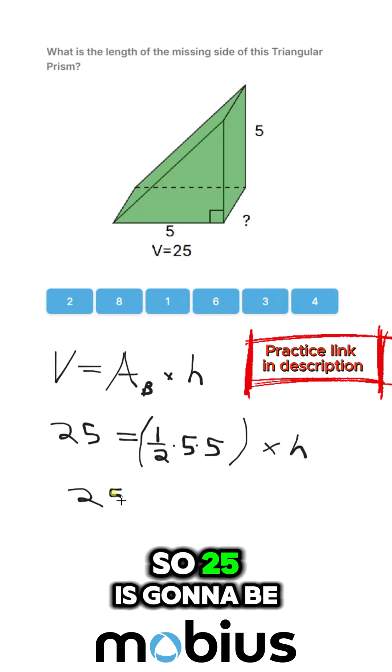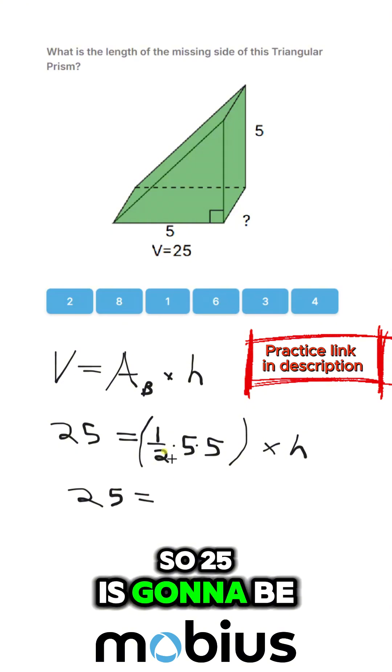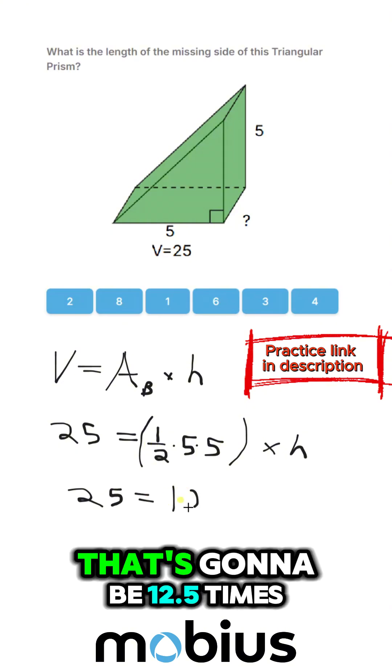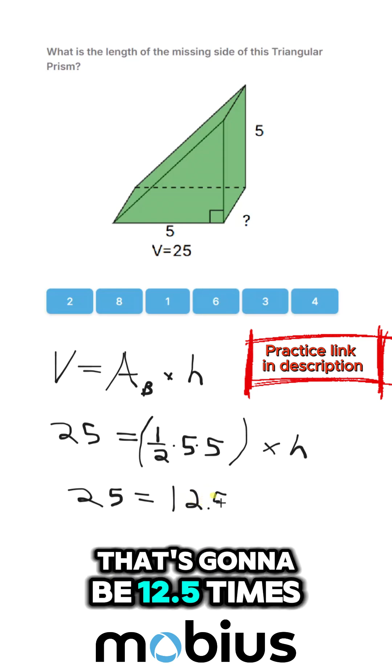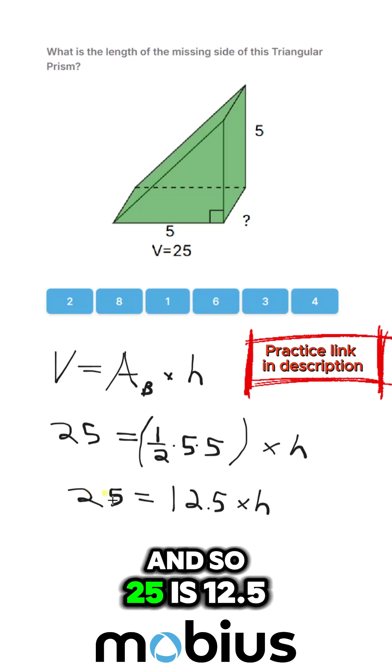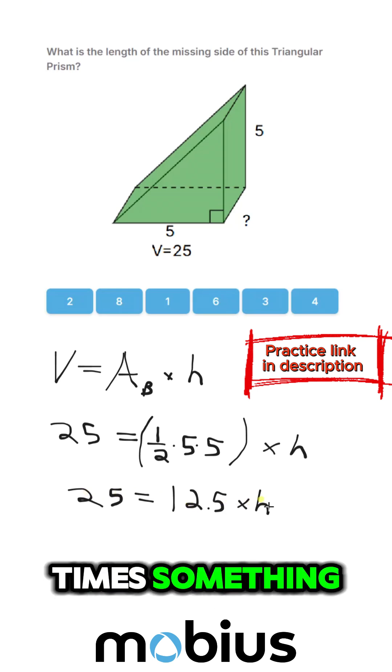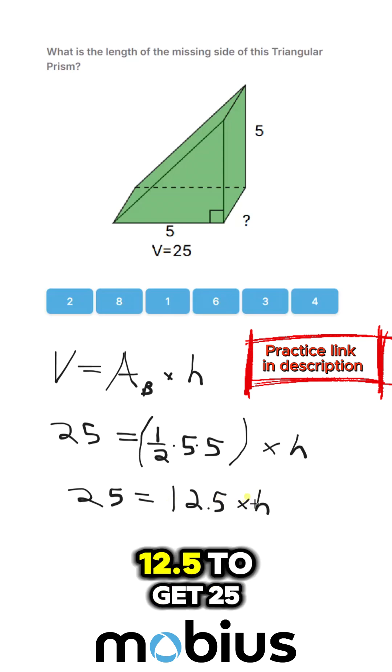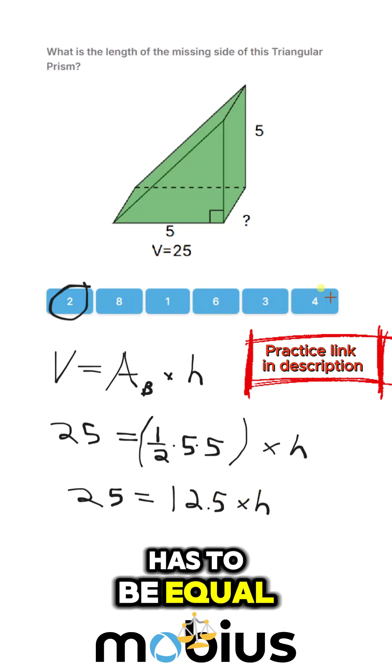So 25 is going to be equal to, if we multiply that out, that's going to be 12.5 times our height. And so 25 is 12.5 times something and intuitively we've got to double 12.5 to get 25. And so our height has to be equal to 2.